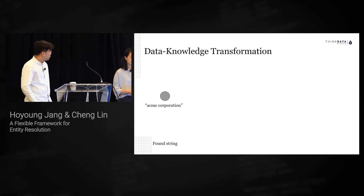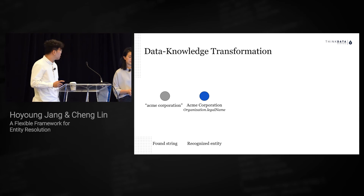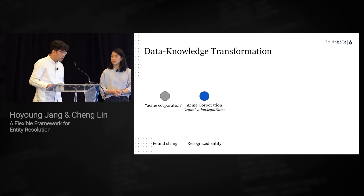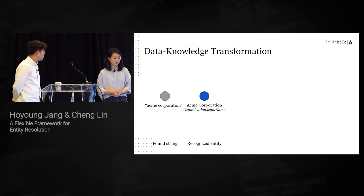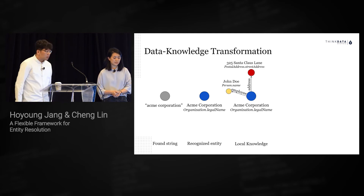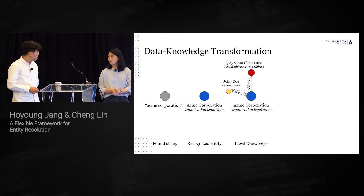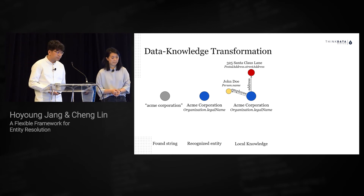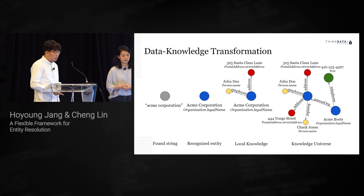Here's another view of how data gets transformed into knowledge. A string 'Alchemy Cooperation' is found from data but has no context. After multi-stage classification, 'Alchemy Cooperation' is now known as an organization with property 'legal name.' Related entities with their properties are then extracted from the data set, forming local knowledge. With entity resolution, knowledge gets aggregated and consolidated, forming a broader knowledge graph.